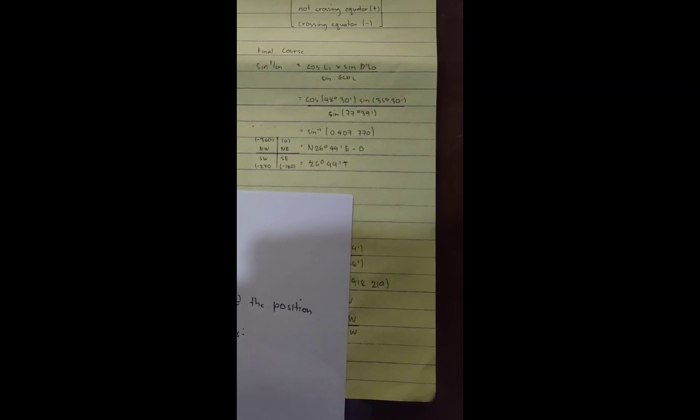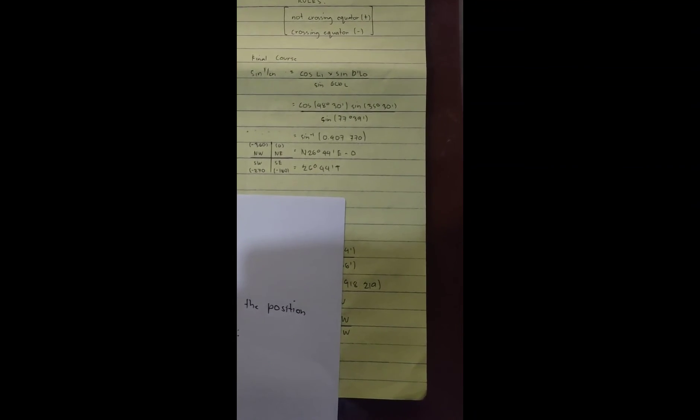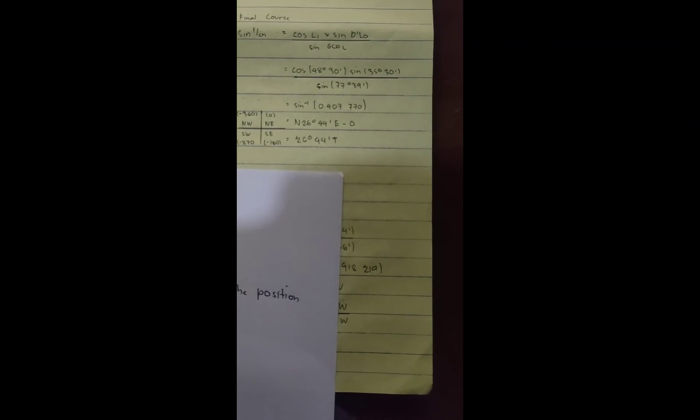Sin F cos equals cos lat 1 times sin D long over sin great circle distance. So: sin of 48 degrees 30 minutes times sin 35 degrees 30 minutes over sin 77 degrees 39 minutes. We get sin inverse of 0.407770, which equals north 26 degrees 44 minutes, minus 0. So the answer is 26 degrees 44 minutes. The table shows: northeast is negative 360, northeast is 0, southwest is negative 270, southeast is negative 180.